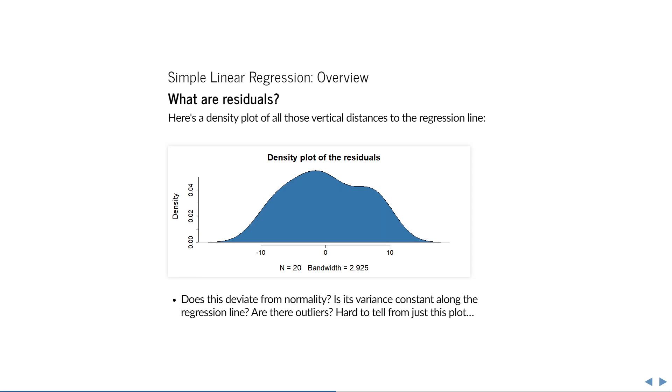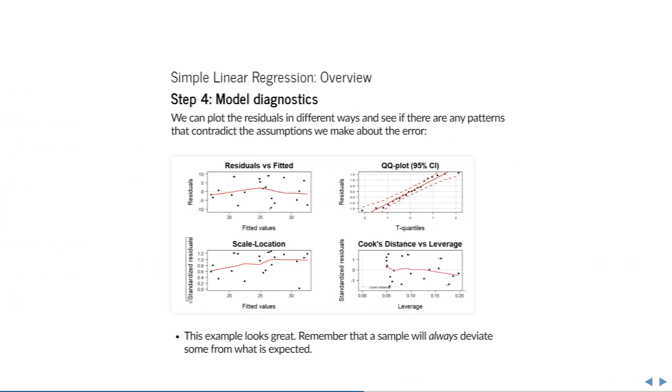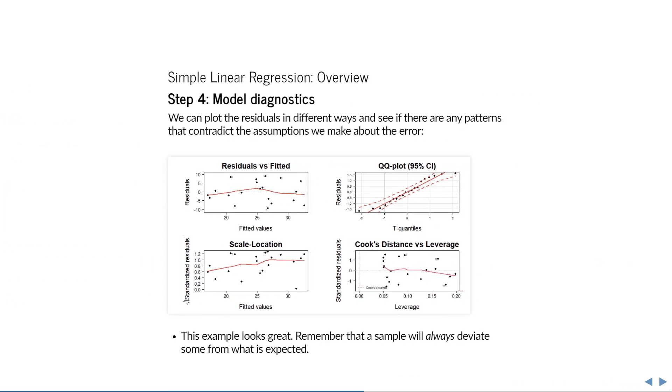But it is rather hard to tell whether any assumption is violated just by looking at this. There are two bumps, which is not a feature of the normal distribution. But then again, these are only residuals of 20 observations. So is this really not approximately normal? That is why we use diagnostic plots. They make it a lot easier to see what's going on. The diagnostic plots are nothing more than a bunch of different ways to plot the residuals, for the purpose of easily identifying violated assumptions.